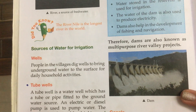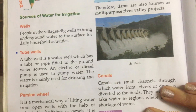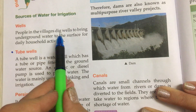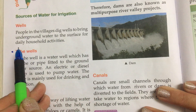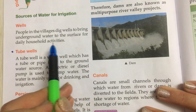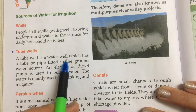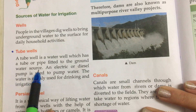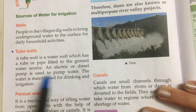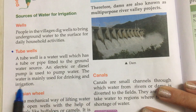Now, sources of water for irrigation. First of all is wells. People in the villages dig wells to bring underground water to the surface for daily household activities. Tube wells: a tube well is a water well which has a tube or pipe fitted to the groundwater source. An electric or diesel pump is used to pump water. The water is mainly used for drinking and irrigation.